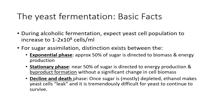During alcoholic fermentation, yeast cells increase to about 1–2 × 10⁸ cells per milliliter. For sugar assimilation, there's a distinction between phases: during the exponential growth phase, 50% of sugar is directed to biomass and energy production; during the stationary phase, the other 50% goes toward energy production and byproduct formation — esters and other alcohols — without significant change in cell biomass. In the decline and death phase, sugar is mostly depleted, ethanol makes yeast cells leak, and survival becomes very difficult.